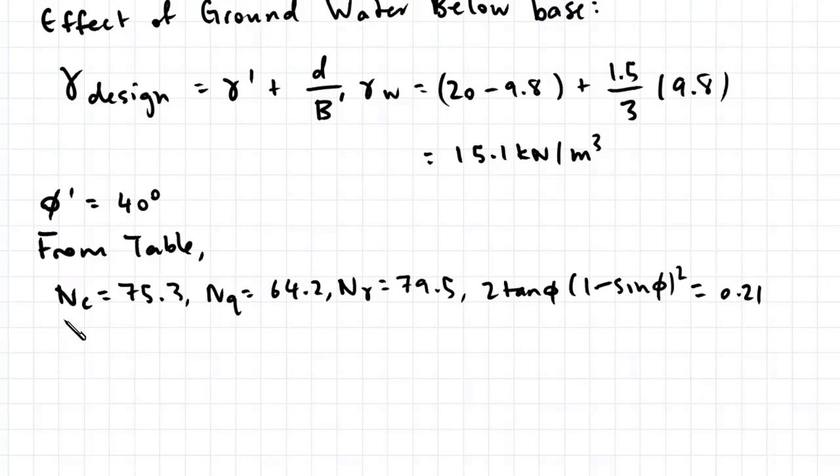We can actually ignore Nc and dc because our cohesion is equal to 0, so that portion of Hansen's equation actually cancels out. So let's just go and find dq, so 1 plus 0.21, 1.5 divided by 3, that's 1.105. And dgamma is 1.0.